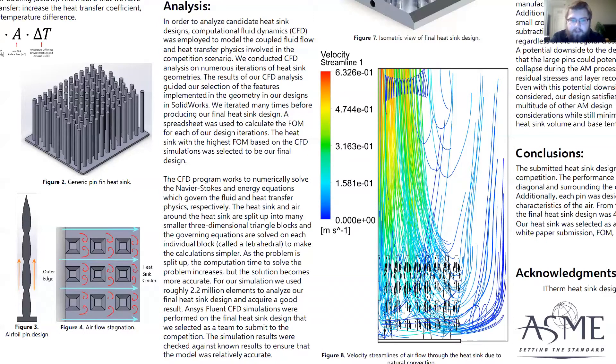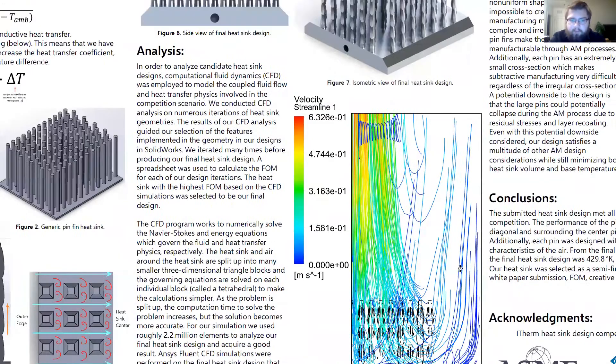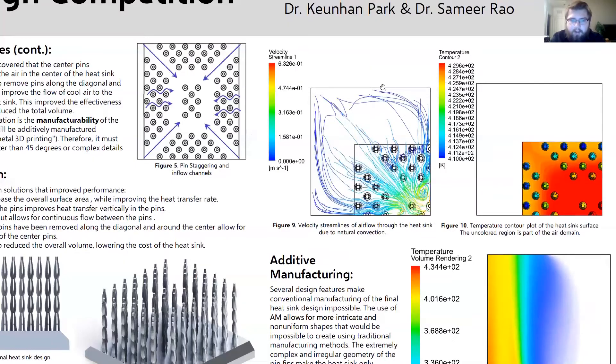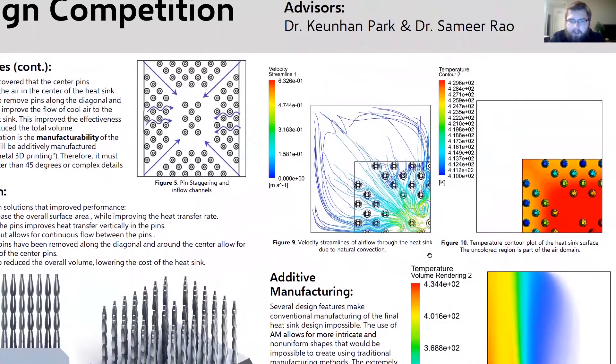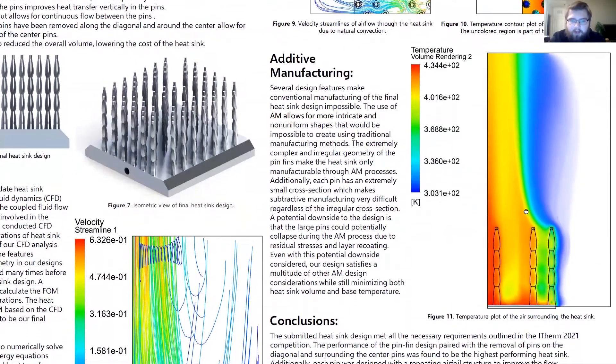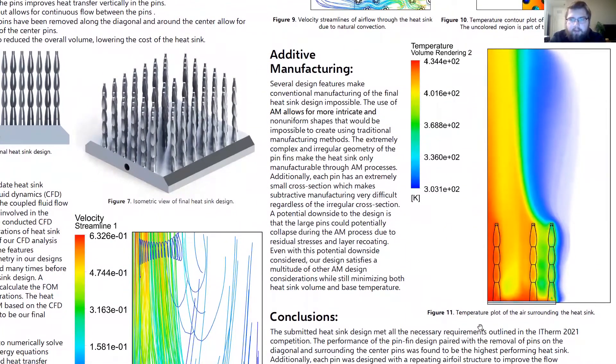The simulations of our designs can be seen in figures 8, 9, 10, and 11. Figure 8 shows a side view of the flow of the air through the heatsink due to rising hot air. Figure 9 shows a top-down view of the airflow through the heatsink. Figure 10 shows a top-down view of the temperature of the heatsink. And Figure 11 shows a temperature plot of the air in the final heatsink design from the side.